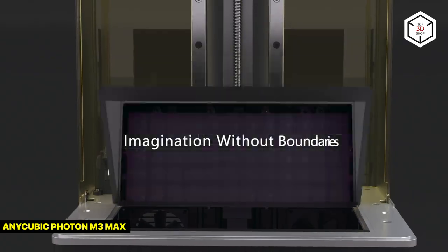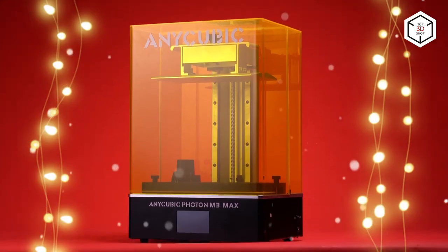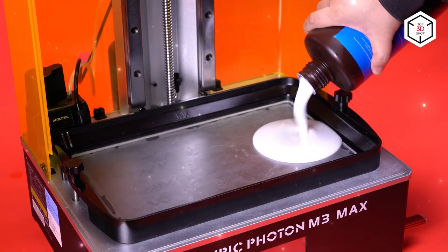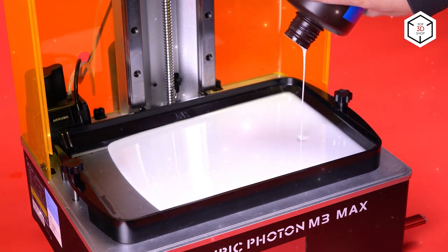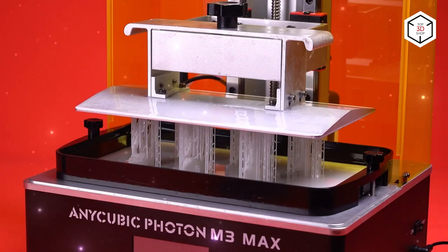The Anycubic Photon M3 Max is a budget-friendly high-speed LCD 3D printer. It boasts a 7K resolution panel which ensures high printing accuracy with a single layer not thicker than 0.01 millimeters. The print speed is impressive—it takes only one to three seconds to print a layer.